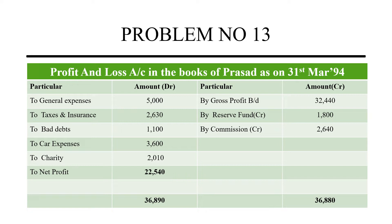Now let's get into the profit and loss account. The first one is general expenses — general expenses are those which are not related to trade, that's why they come to profit and loss account. Taxes and insurance — that's why we maintain accounts. We pay taxes; that accounting work, clerical work, or office work is indirect expenses.